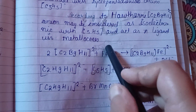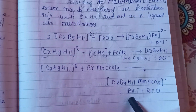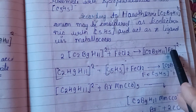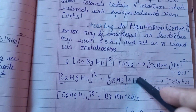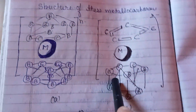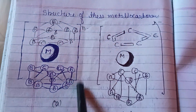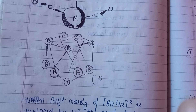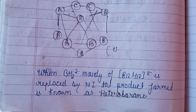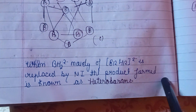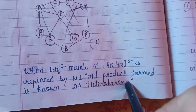In metallocarborane reactions, the anion reacts with FeCl2 and again FeCl2. Here you can see the structures of these metallocarboranes — structure 1, structure 2, and structure 3.